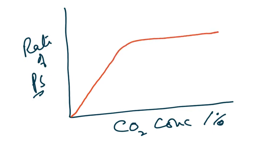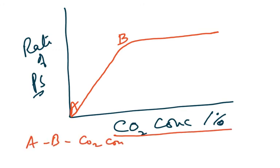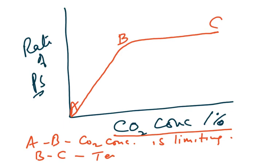The CO₂ concentration graph has the same shape as the light intensity graph. From A to B, CO₂ concentration is the limiting factor. From B to C, some other factor is limiting — which could now be temperature or light intensity.